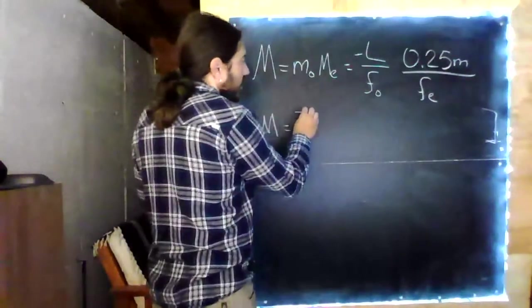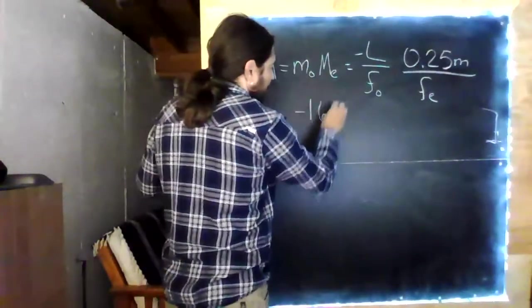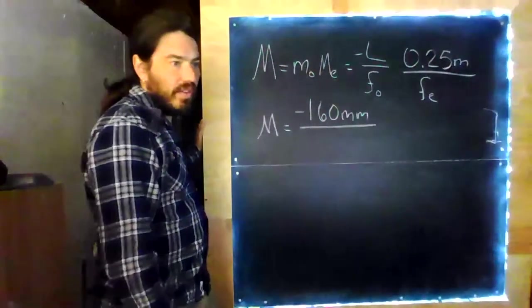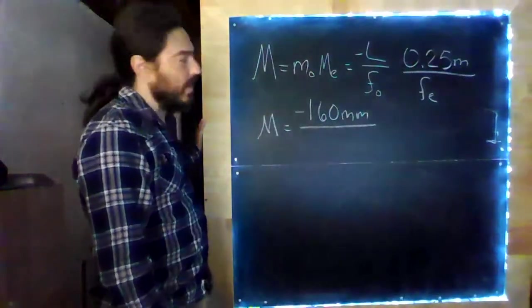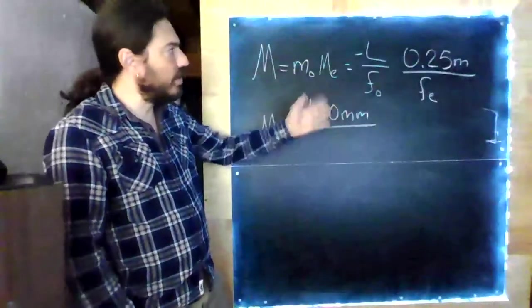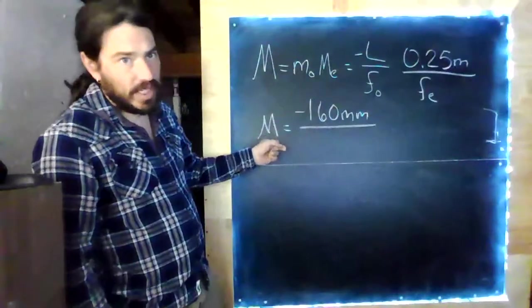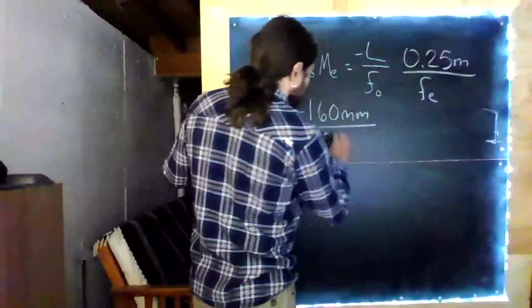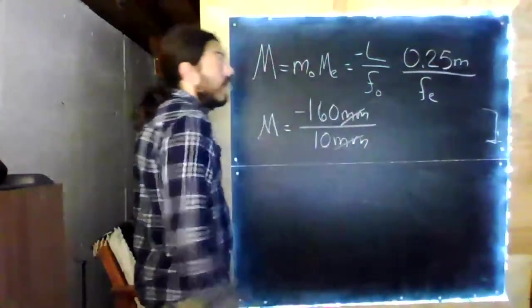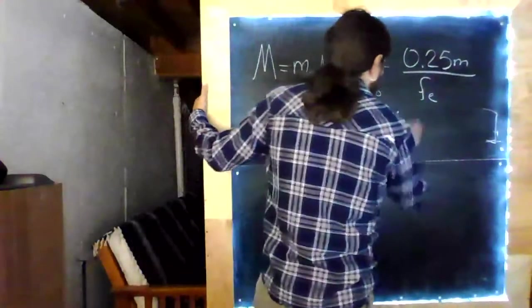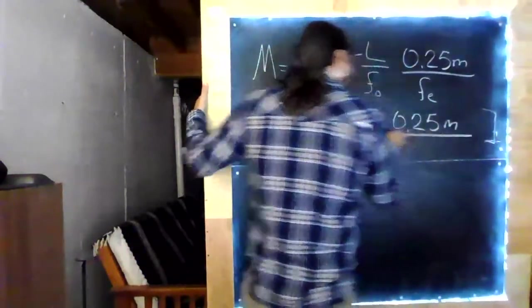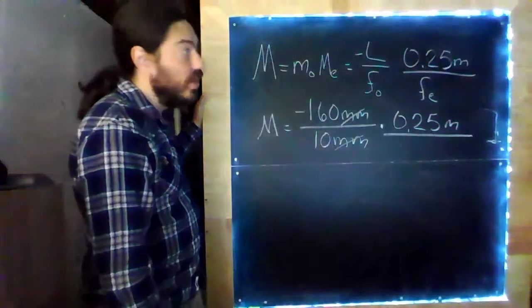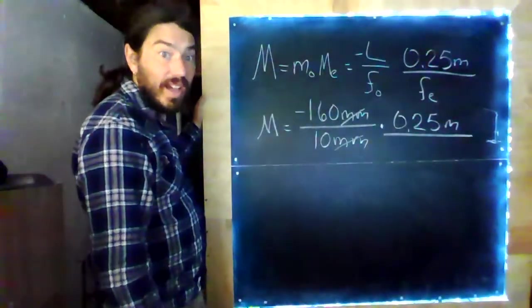So, our L, again, we're going to use this 160 millimeters. The objective focal length is 1 centimeter, but we really want it to cancel with this. We need all our units to cancel because our magnification should be unitless. So, if this is in millimeters, we want to convert this to millimeters as well. And our eyepiece has a focal length of 2.5 centimeters.